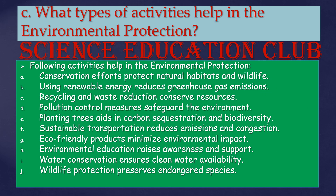What types of activities help in environmental protection? Conservation efforts protect natural habitats and wildlife. Using renewable energy reduces greenhouse gas emissions. Recycling and waste reduction conserve resources. Pollution control measures safeguard the environment. Planting trees aids in carbon sequestration and biodiversity. Sustainable transportation reduces emissions and congestion. Eco-friendly products minimize environmental impact. Environmental education raises awareness. Water conservation ensures clean water availability. Wildlife protection preserves endangered species.